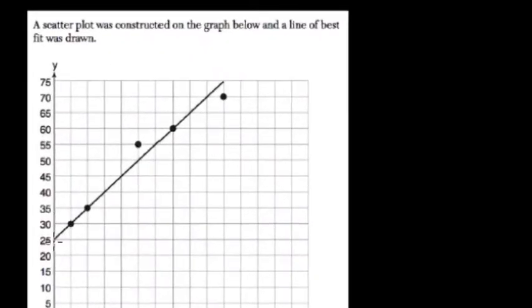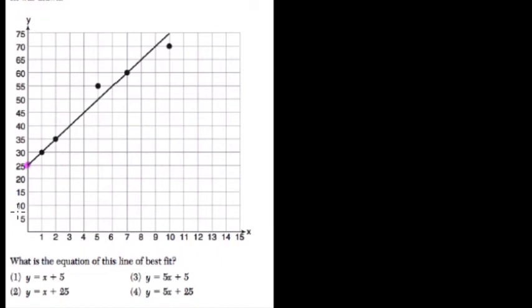The scatterplot was constructed. What is the equation for this line to best fit? Notice our y-intercept is here at 25, so we need the equation of the line in y equals mx plus b form where the b value is 25, the y-intercept.